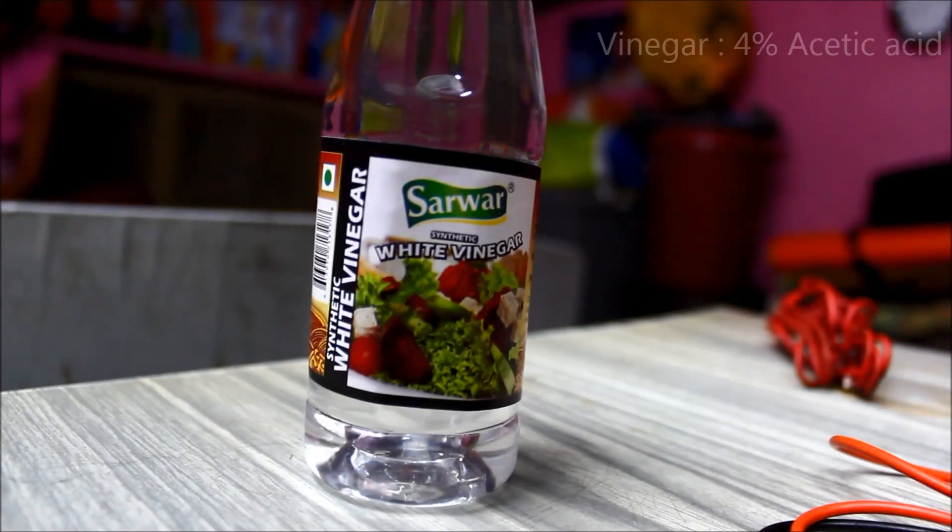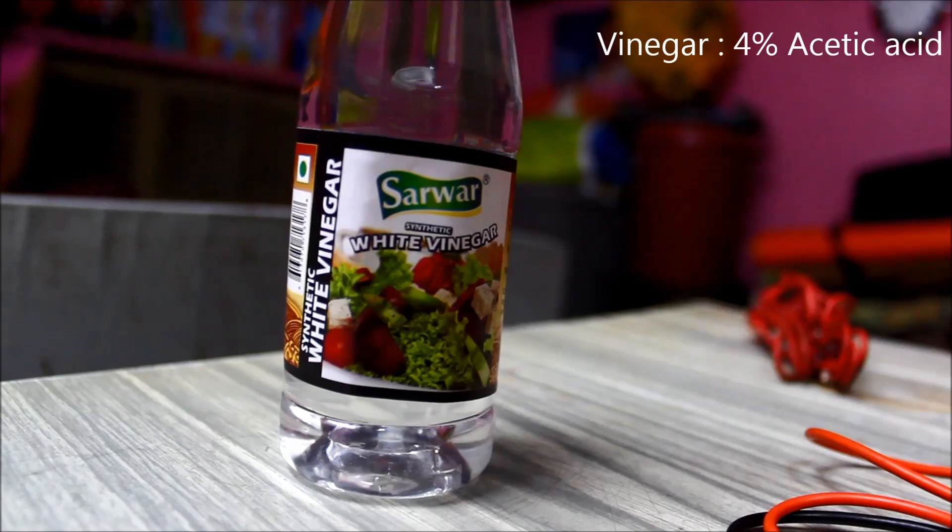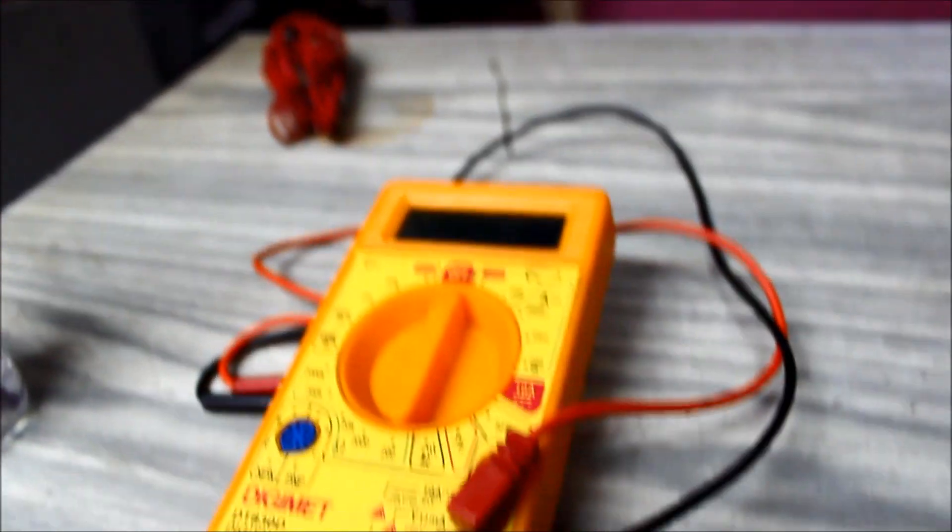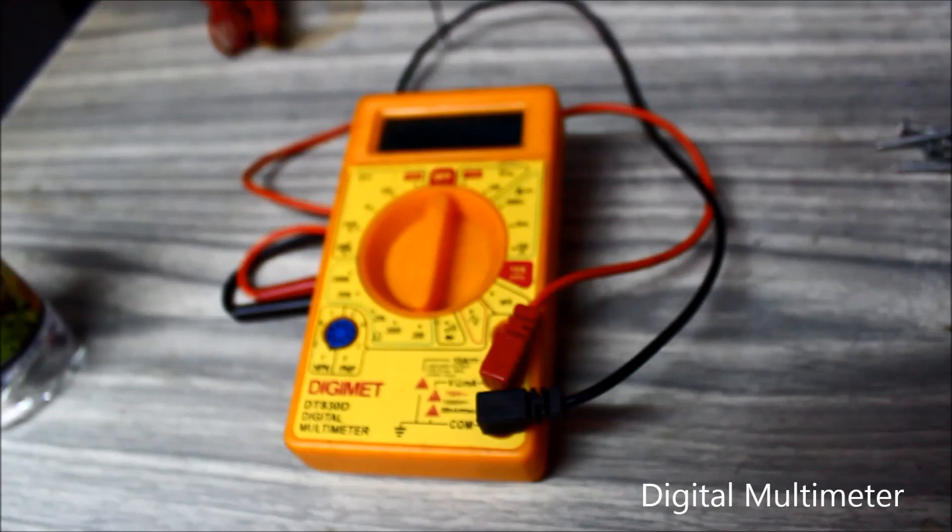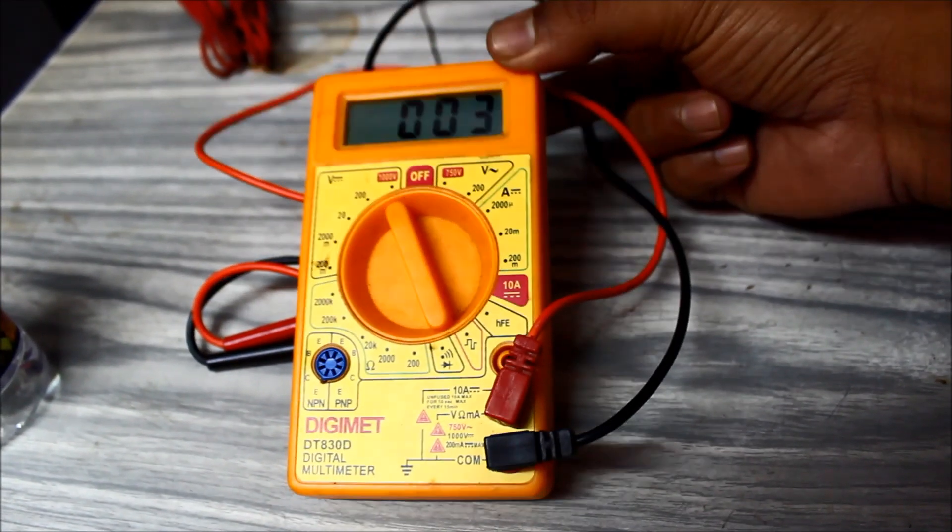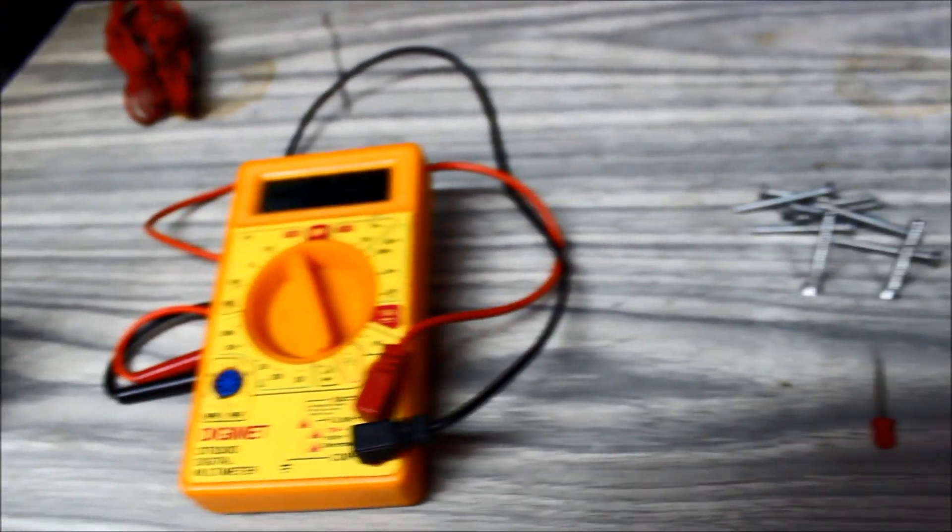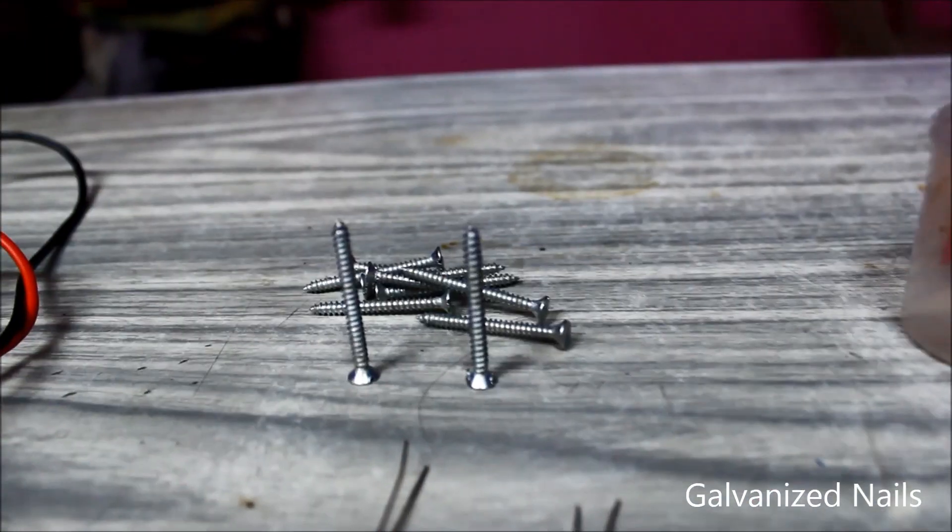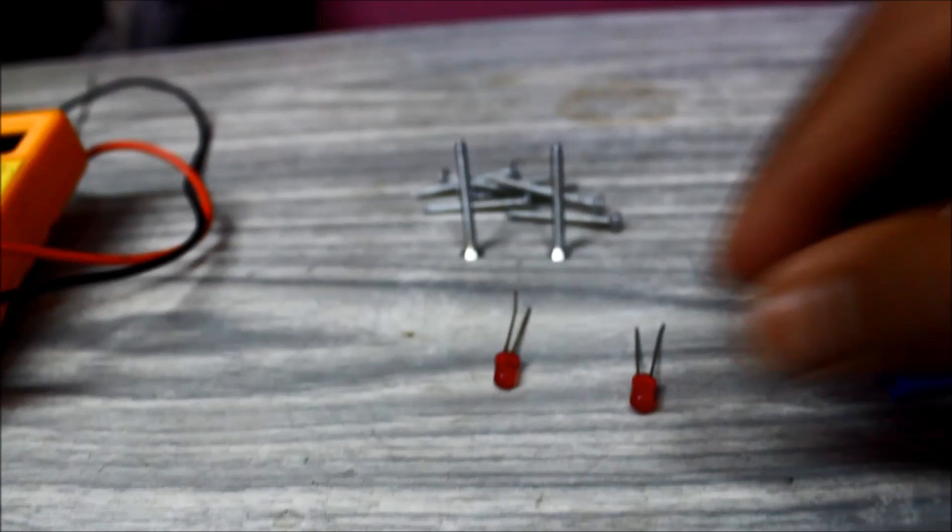What you'll need for this experiment are: vinegar, a digital multimeter to record the voltage—this is optional for bench testing—galvanized nails, and an LED bulb.